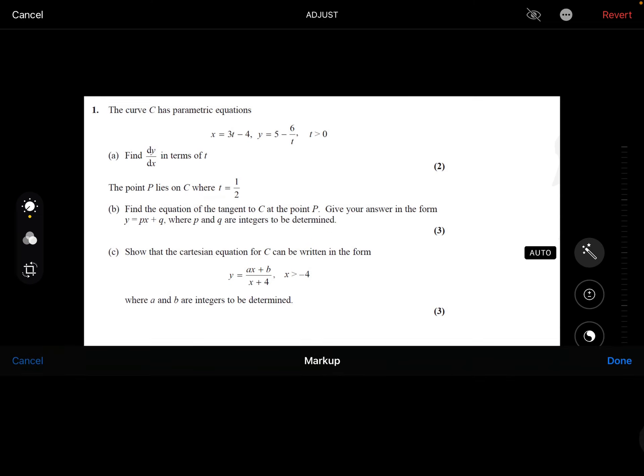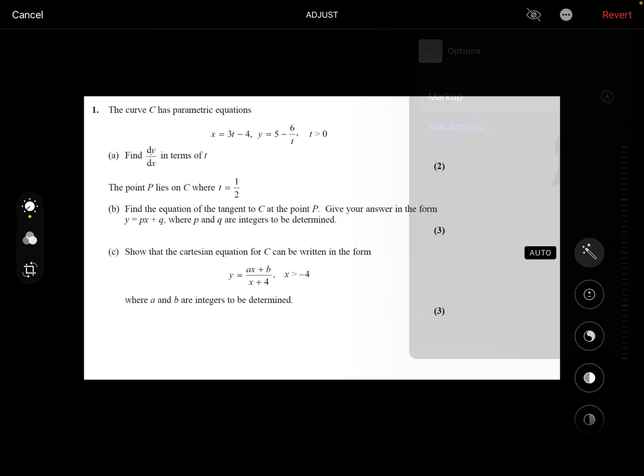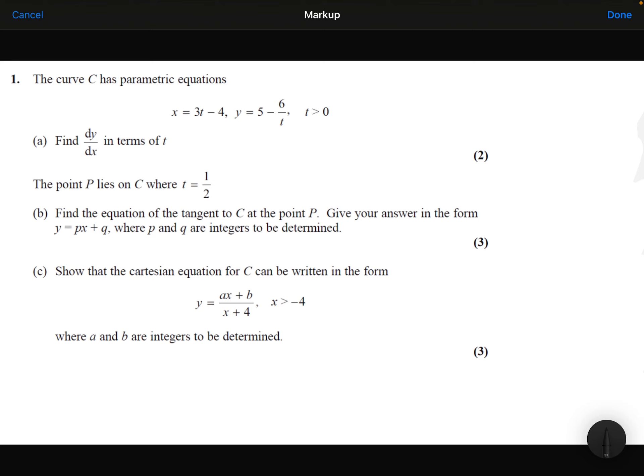Then finally, part C. Show that the Cartesian equation for the curve can be written in the form y equals ax plus b over x plus 4, where a and b are integers to be found.